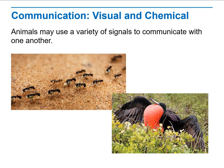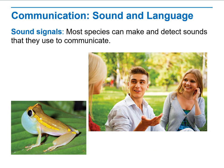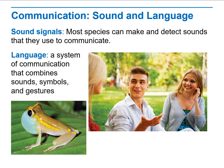Animals may use a variety of signals to communicate with each other, including sounds, movement, and singing. Sometimes the movements they make are used to interact and facilitate visual and chemical communication. Most species can make and detect sounds and use them for communication — humans, for example, use voice to communicate and express feelings. A language is a system of communication that combines sounds, symbols, and gestures between animals.